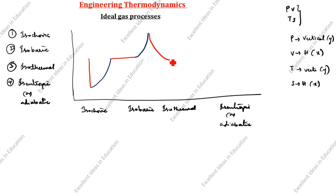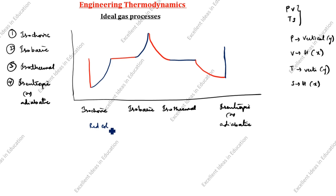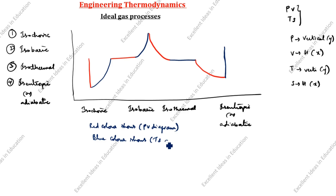For isothermal: the PV diagram goes parabolic, and the TS diagram comes straight. For isentropic: the PV diagram goes parabolic, and the TS diagram comes straight — shown as a straight line. Blue color shows the PV diagram and red color shows the TS diagram.